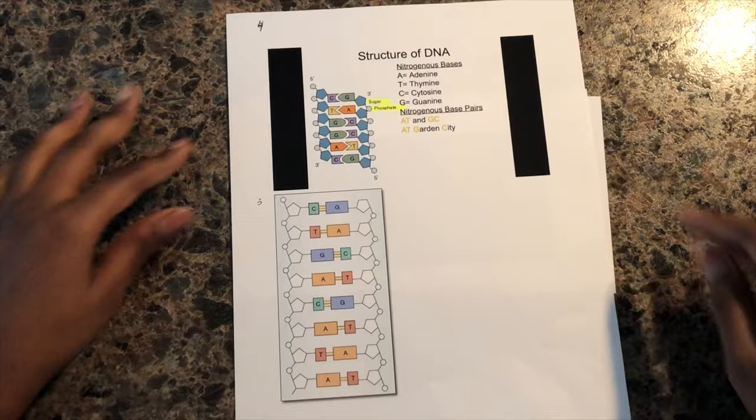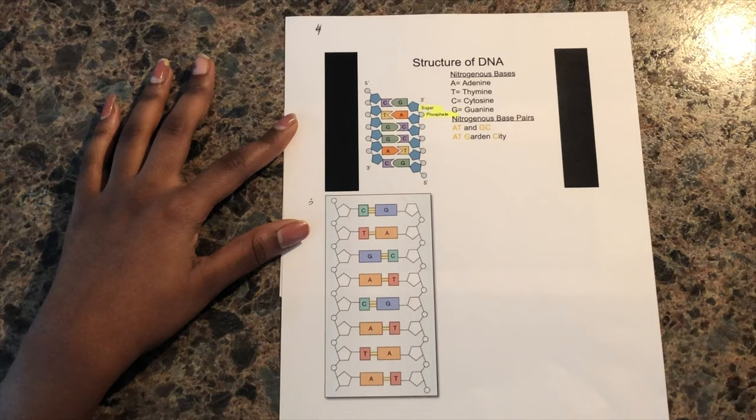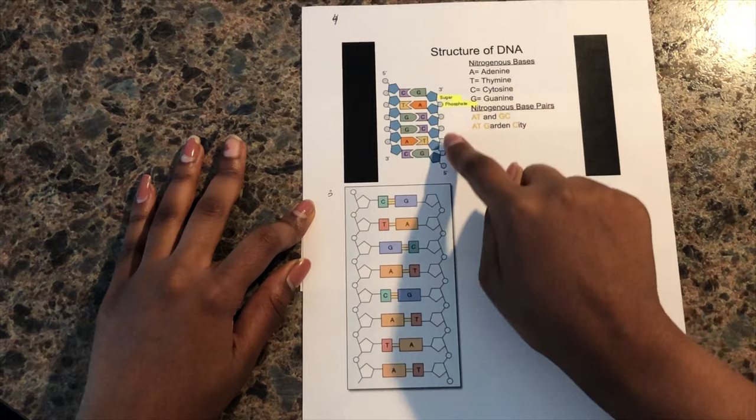On the inside, you will have your hydrophobic bases, and on the outside, you will have your hydrophilic bases. The hydrophobic interactions are the main force stabilizing the double helix. Within the outside columns, you will have your sugars and phosphates.